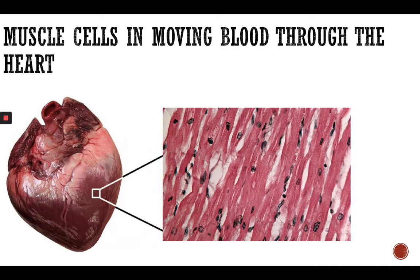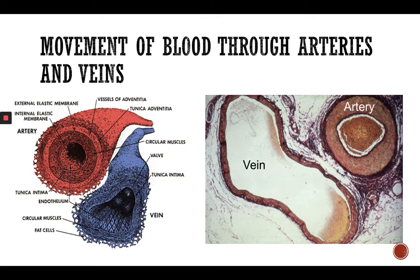Cardiac muscle tissue is called the myocardium. It's a specialized type of muscle that only exists in the heart. It contracts and relaxes involuntarily, and is responsible for keeping the heart pumping blood around the body. You can see how the cardiac muscle actually looks like in the image shown here.